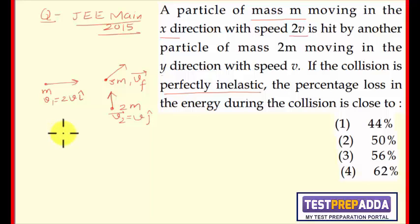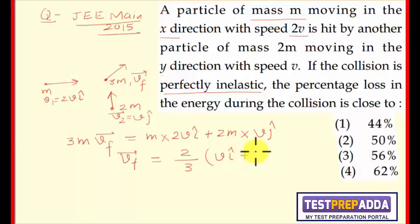Applying conservation of momentum: 3m vf equals m times 2v i-cap plus 2m times v j-cap. This gives vf equals 2 by 3 v times (i-cap plus j-cap). The modulus |vf| equals 2 by 3 root of (v² plus v²), which equals 2 root 2 v by 3.